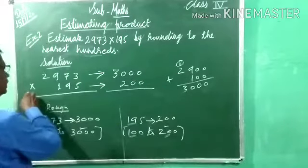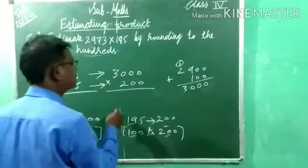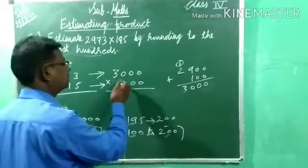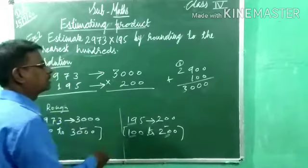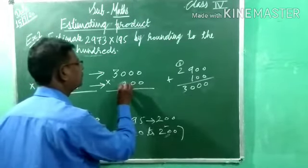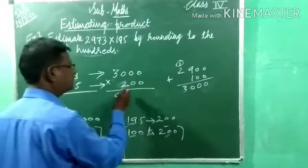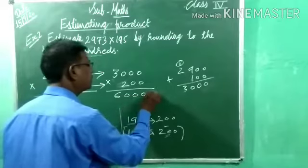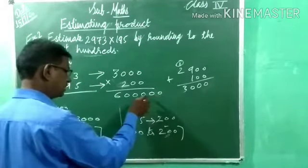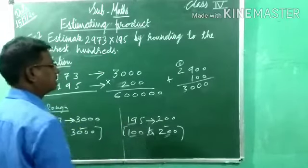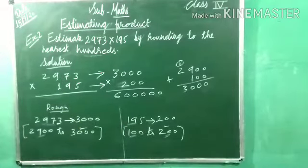Now what we have to do — multiplication. Here also multiplication. Now multiply just the numbers: 3 times 2 is 6. How many zeros? 1, 2, 3, 4, 5 — five zeros total. So 1 lakh stands for 100,000 — the answer is 6 lakh. So estimate first and then solve. Note down this example.